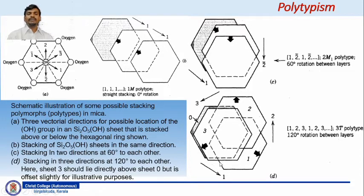Now consider the third type where stacking in three directions at every 120 degrees to each other. If you see sheet 3, it lies directly above sheet 0, the initial sheet, and in between there is sheet 2 of different direction. In this case, you have three different vector directions shown: vector direction 1, vector direction 2, and vector direction 3. If you look at the initial figure, all three—1, 2, 3—are mutually perpendicular.